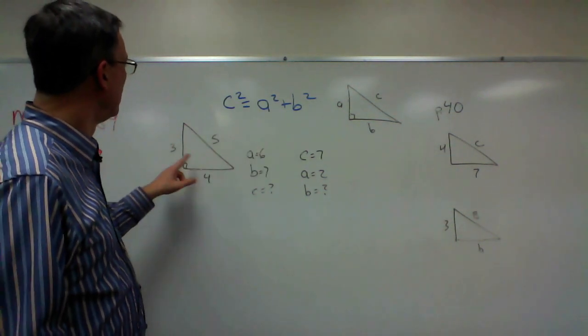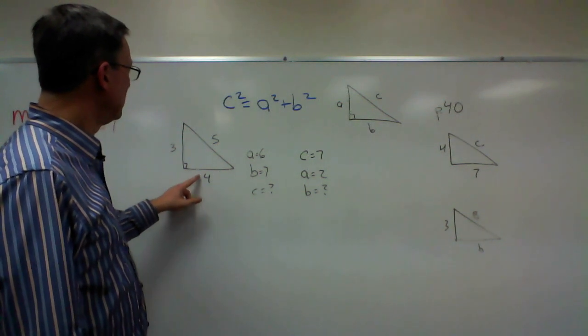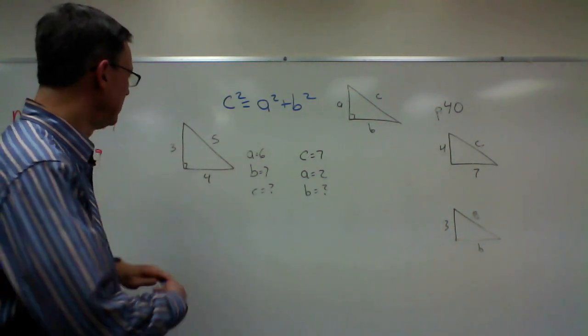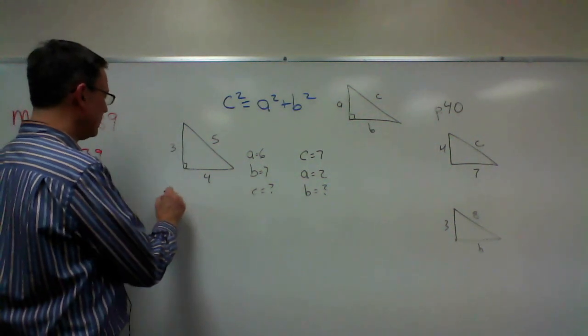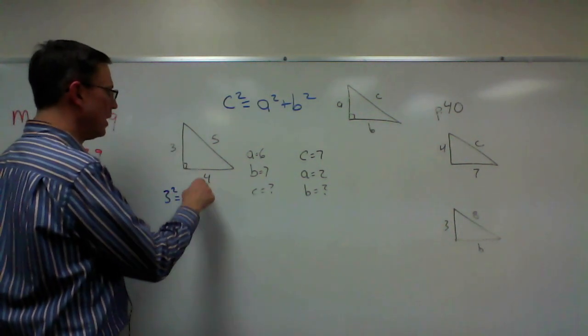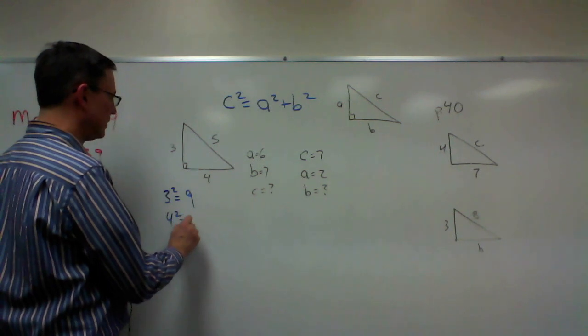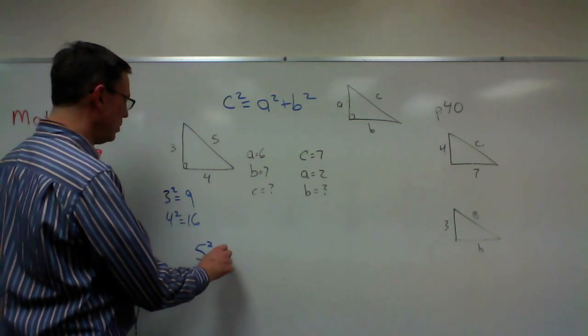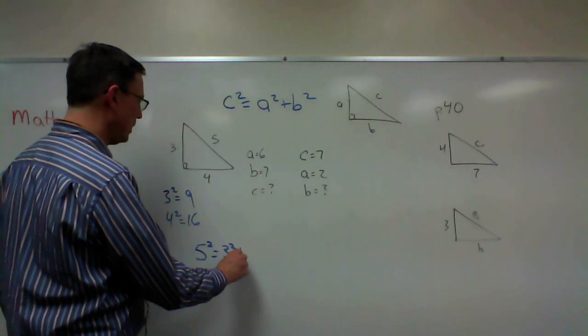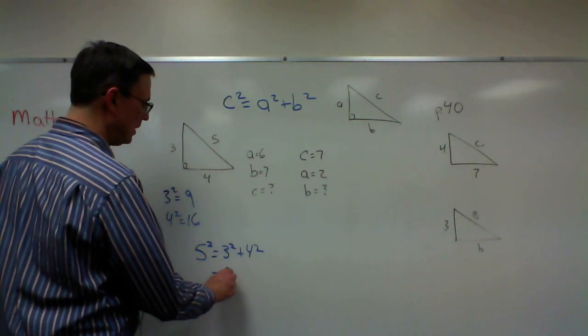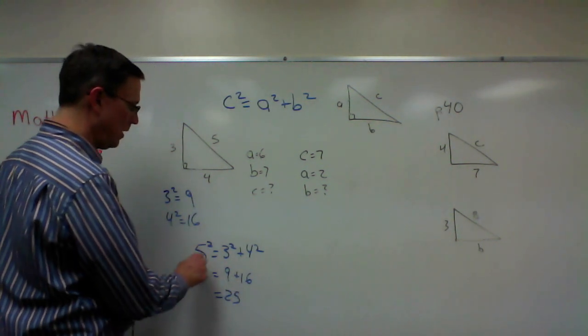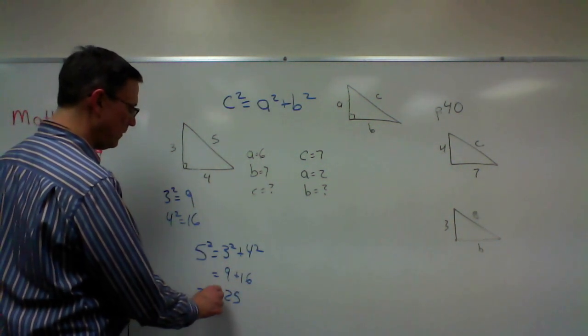Let's see that with this triangle. We have this side is 3, this side is 4, the hypotenuse is 5. What do we get when we take 3 and square it? We get 9. What's 4 squared? 16. So 5 squared should equal 3 squared plus 4 squared. Let's see if it works. 9 plus 16 is 25. Sure enough, 5 squared is 25.